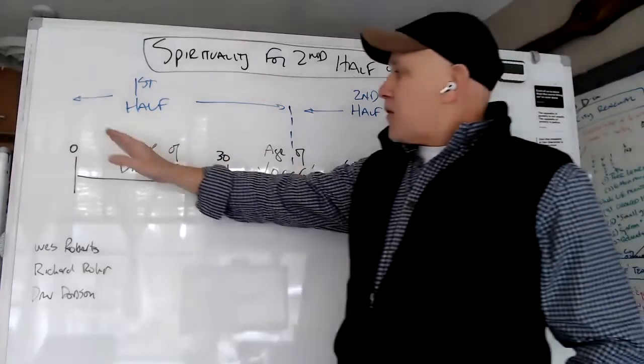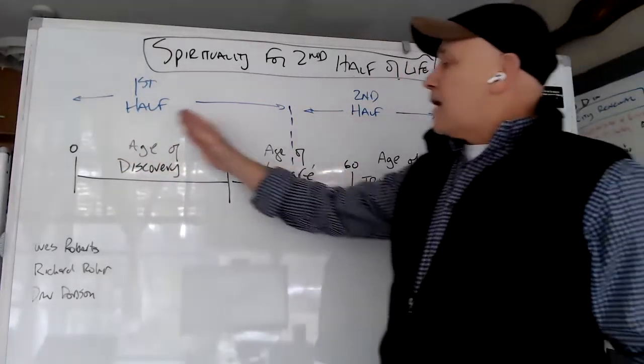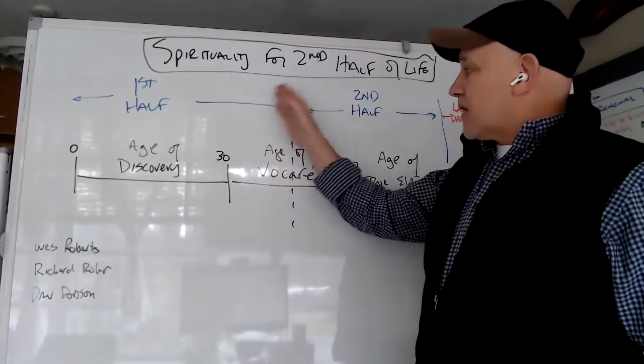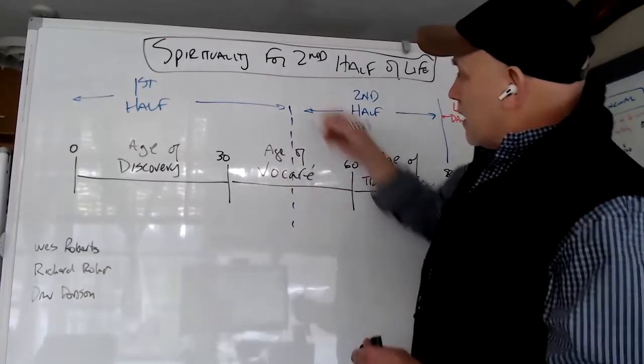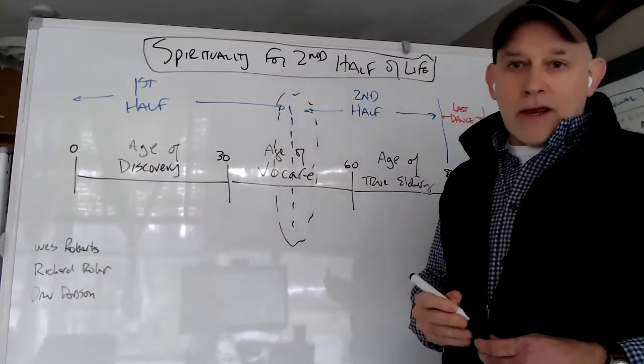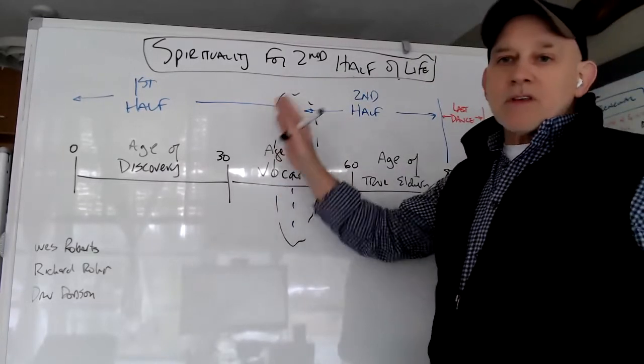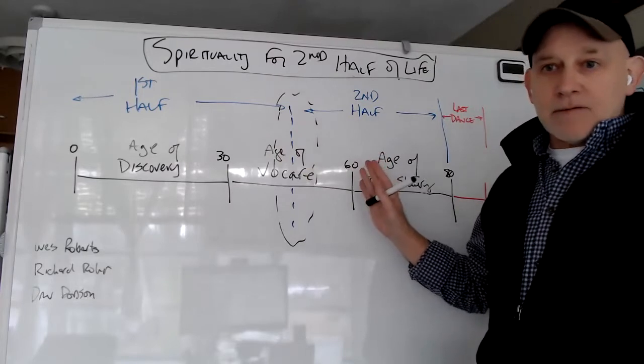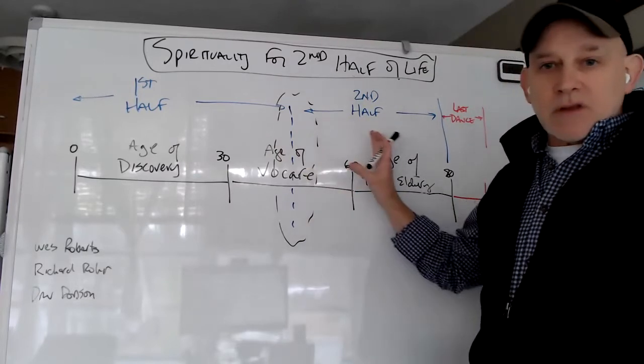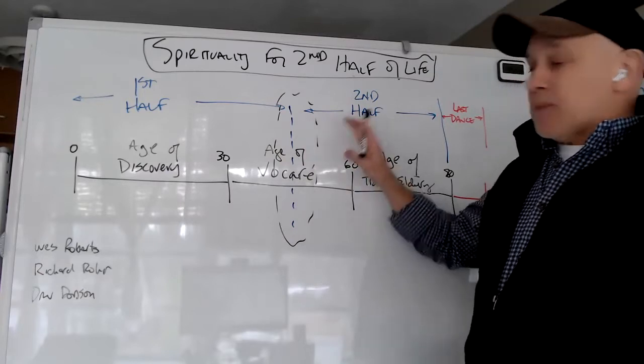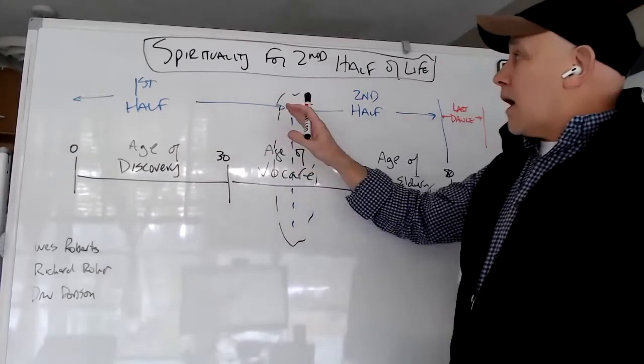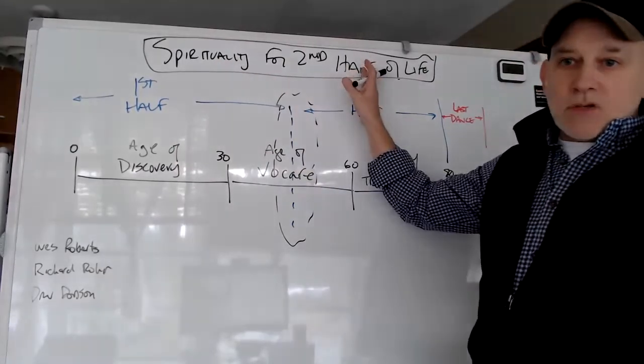And so the basic framework is that we go through life, and then there's a first half, there's some transition here during the age of Vokare. And we actually move into the second half of our life or the second act of our life. And there's some characteristics of that second act of our life. And because of those characteristics that are different than the first half, the spirituality changes a bit as well.